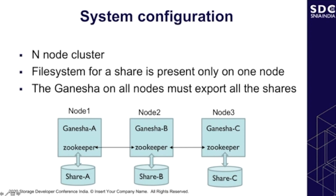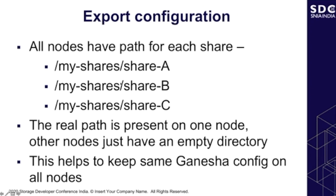To achieve this, each node will have a path for each share — something like /my_shares/share_A, /share_B, and /share_C. Of these, only one path is a real path. Node one will have share A as a real share path, while share B and share C are just empty directories. This is done to keep Ganesha config happy — it needs a directory where it can anchor the share route.